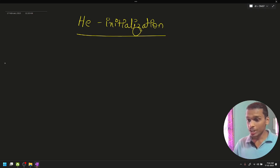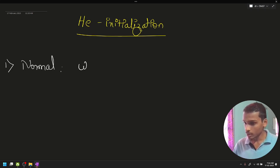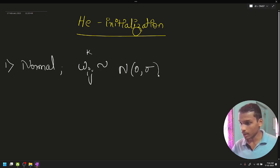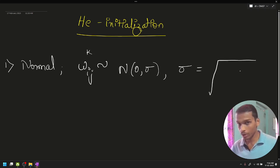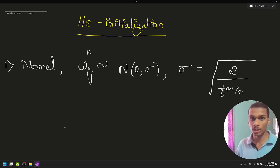In this video, we will talk about normal distribution. The weights W-ij with superscript k follow a normal distribution with mean 0 and standard deviation sigma. Sigma is equal to the square root of 2 divided by fan in. This formula is applied — this is the normal distribution.